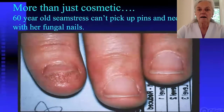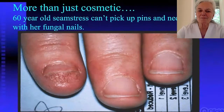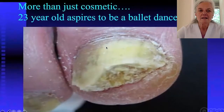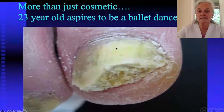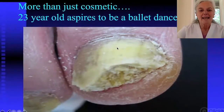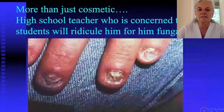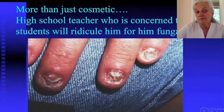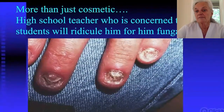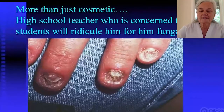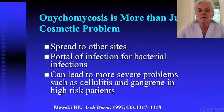A 23-year-old college student wants to be a ballet dancer, but when her nail is affected she cannot do toe dancing. For her, it may seem cosmetic but it absolutely is not. A high school teacher is concerned that students will ridicule him for his fungal nails, so his self-esteem and self-image are at stake. Onychomycosis can also spread to other sites and be a portal of entry for bacterial infections, leading to more severe problems such as cellulitis and gangrene.